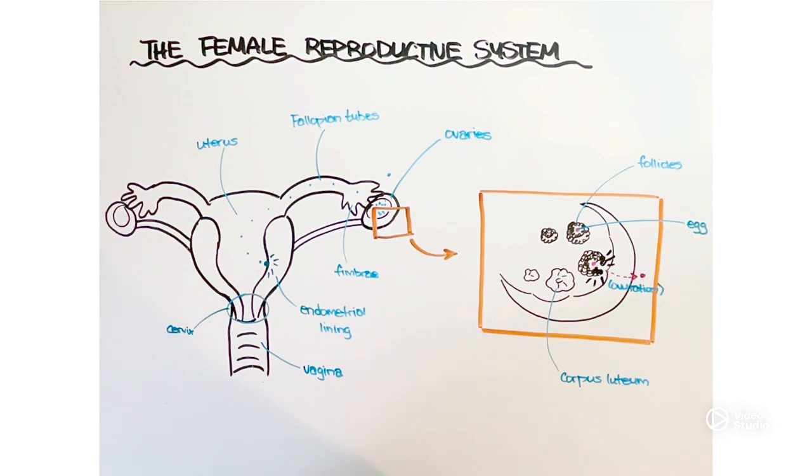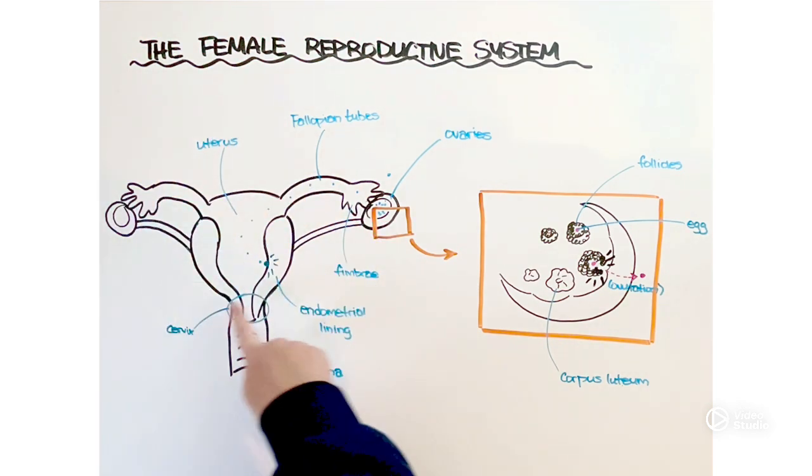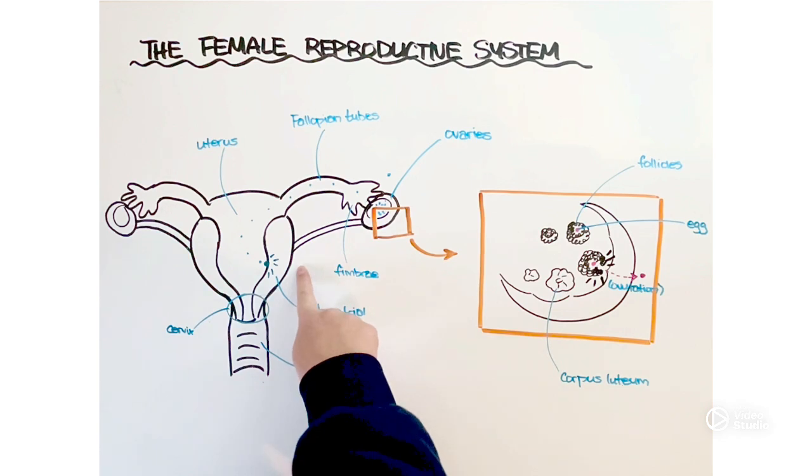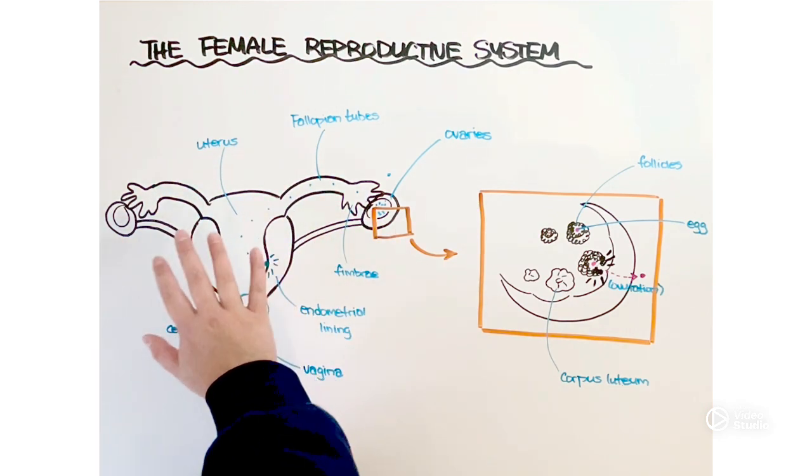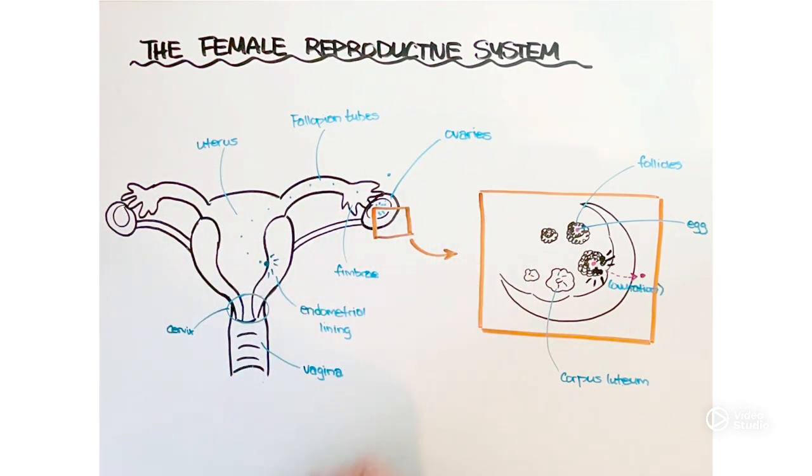Another key difference you may have noticed is that all of this anatomy that we've labeled here today is internal. You can't see any of this from the outside of the female body whereas obviously the male genitalia is externally visible, at least some of it, namely the testes and the penis. That isn't to say that females don't have external genitalia. Of course they do.